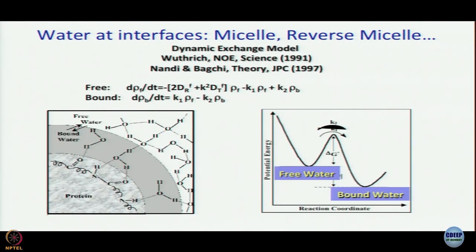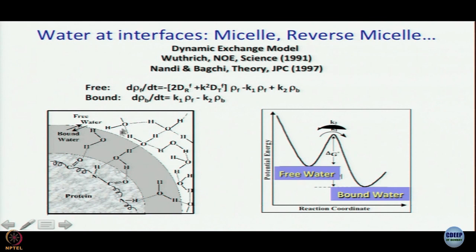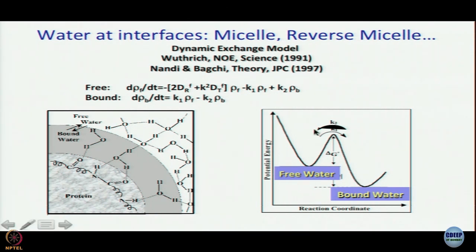The bound water can be thought of as frozen — it does not directly participate in solvation. However, there is a dynamic exchange between bound and free water. It is always the free water that reorients around the newly created dipole moment. This exchange, with its associated forward and backward rate constants K1 and K2, is what gives rise to the slow component of solvation — as shown in the Nandi-Bakshi theory.